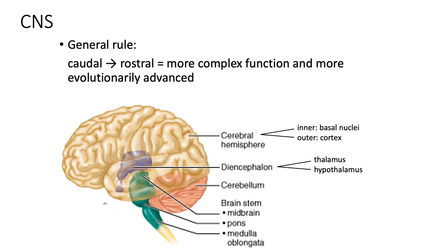As a general rule with the brain, as we move from caudal — meaning tail — to rostral — meaning front — we see more complex function and more evolutionarily advanced structures. The frontal area involves problem solving, planning, the ability to inhibit impulses, and working memory. Lower animals lack that rostral complexity and rely more on those lower brain centers.